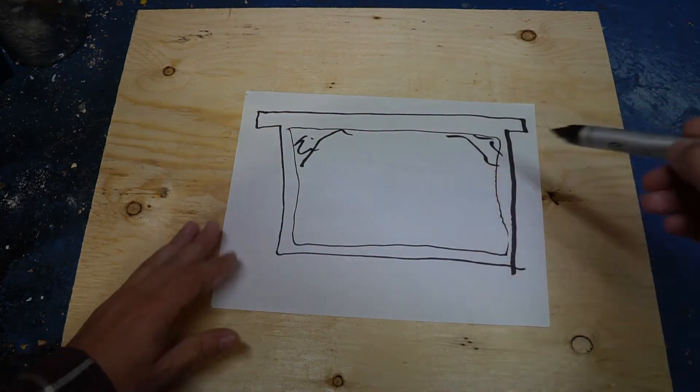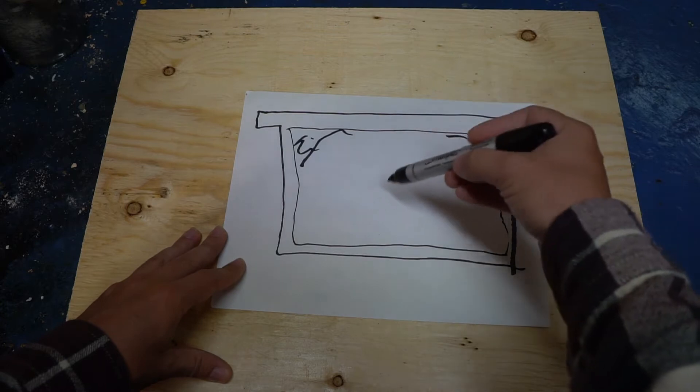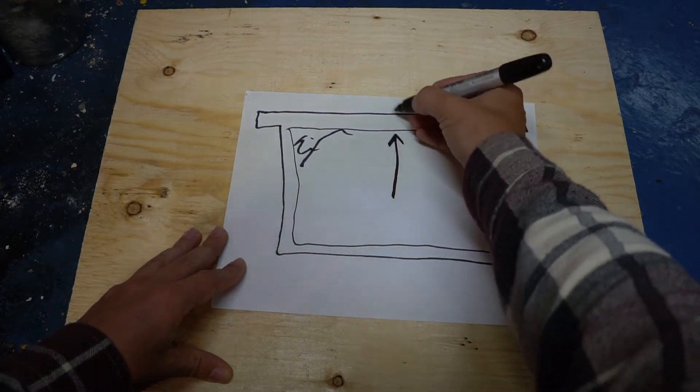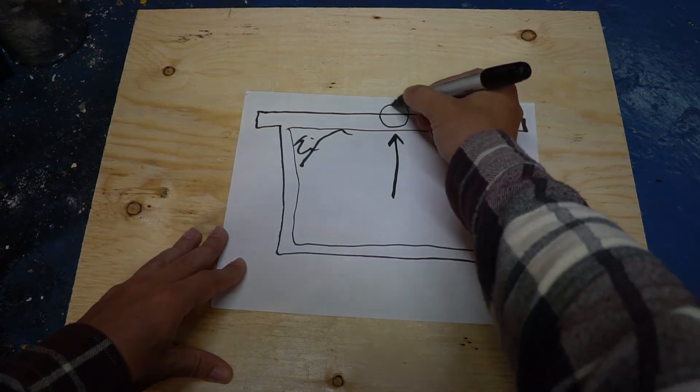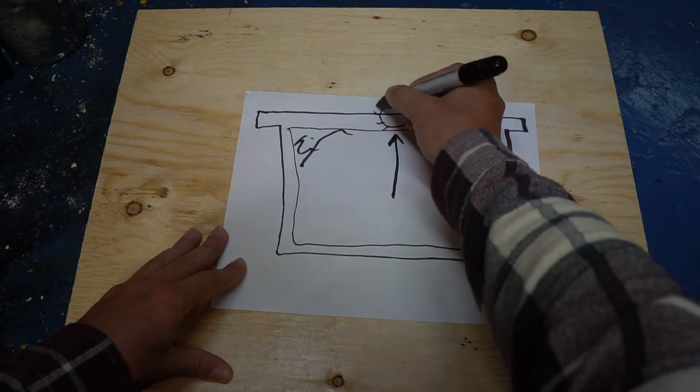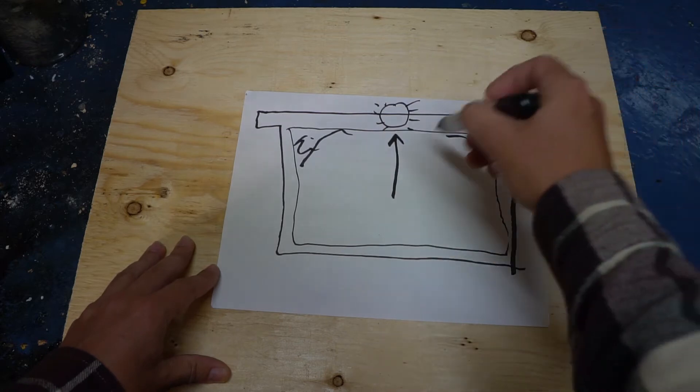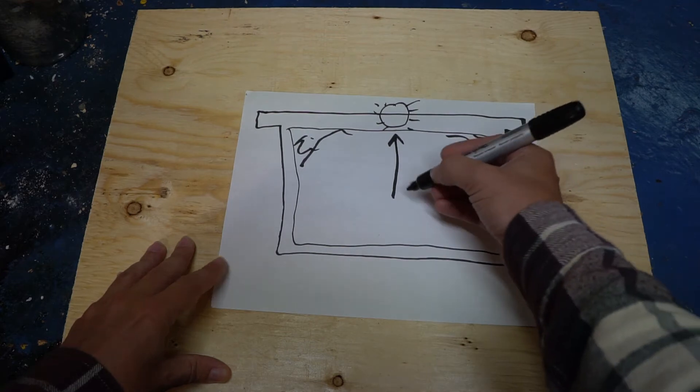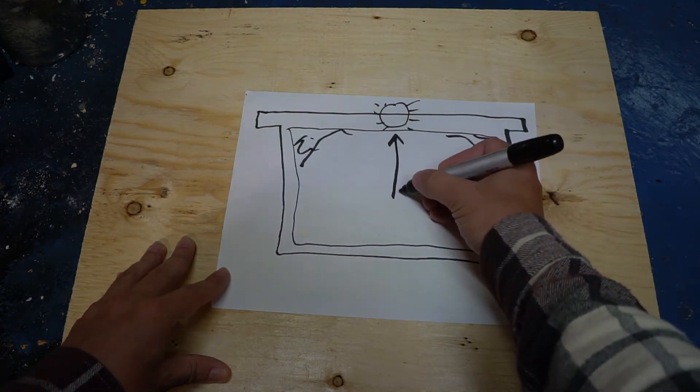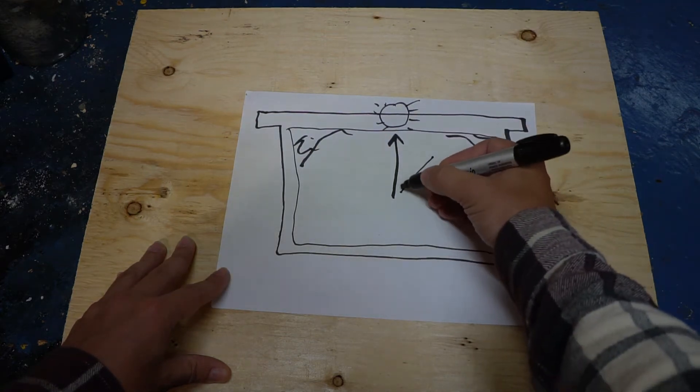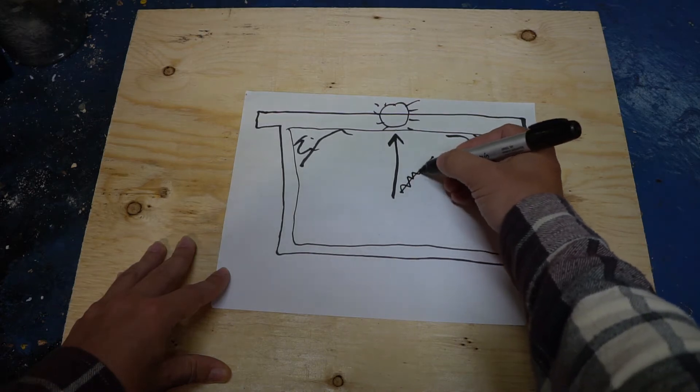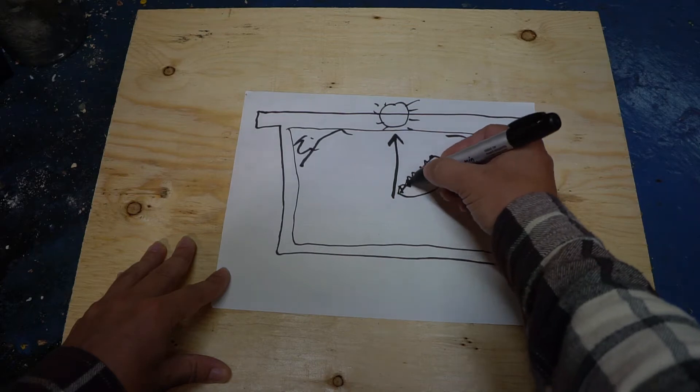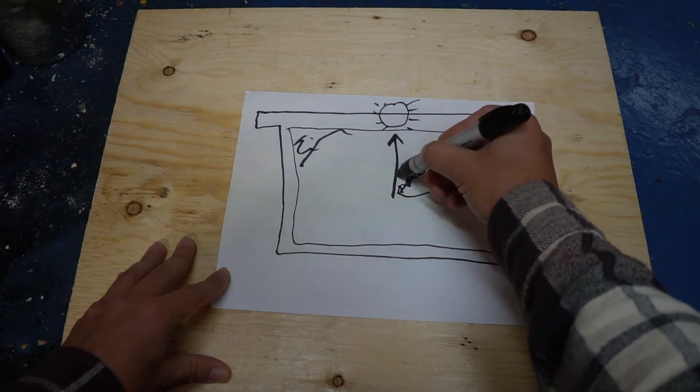So a bee will dance on this comb, and up represents where the sun is located. So if the sun is in the western part of the sky, this represents west, and the bee is going to dance at an angle relative to the sun. The bee will wiggle away, and then she'll come back around, and then she'll wiggle here again, and then she'll come back around, and she'll wiggle again.